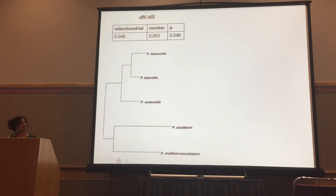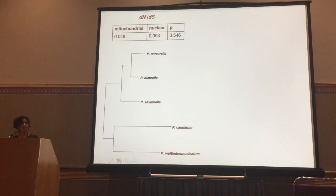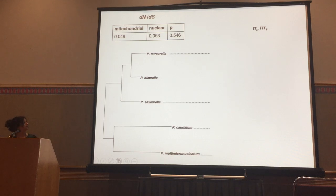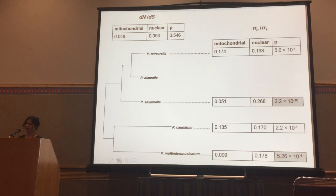First, we looked at dN/dS across the phylogeny for both mitochondria and nuclear genes, and we don't find any significant difference in dN/dS. Then we looked at the ratio of non-synonymous to synonymous diversity (πN/πS) for all four species for mitochondria and nuclear separately. We find that two species — tetraurelia and caudatum — show no differences, but that sexaurelia and multimicronucleatum have lower πN/πS values, suggesting stronger purifying selection.